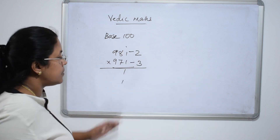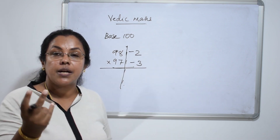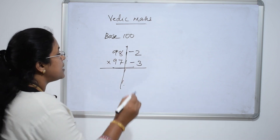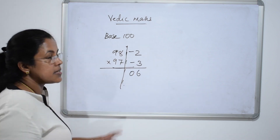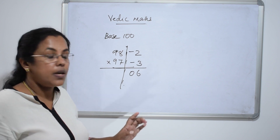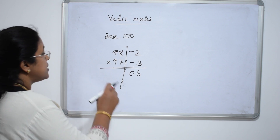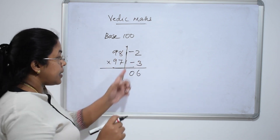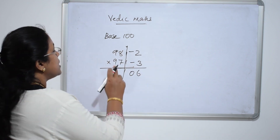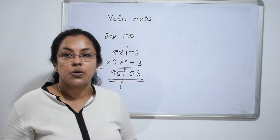Divide the answer into two parts — the right part and the left part. The right part always contains two digits since the base is 100. Multiply minus 3 and minus 2: three 2s are 6. Write it as 06. For the left part, subtract 2 from 97 — or 3 from 98, both give the same result: 97 minus 2 is 95. So the final answer is 9506.